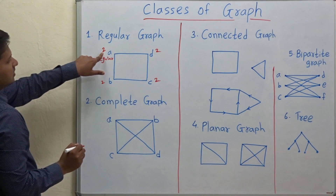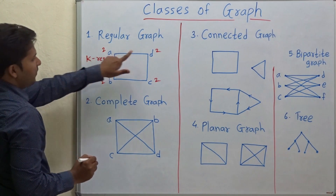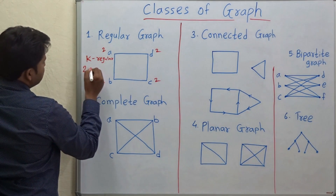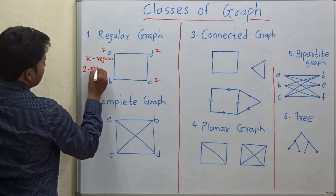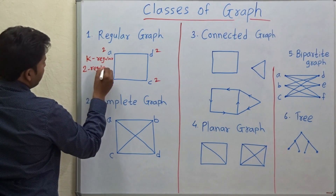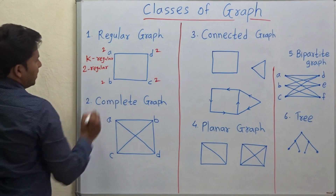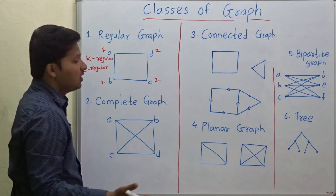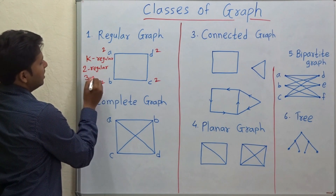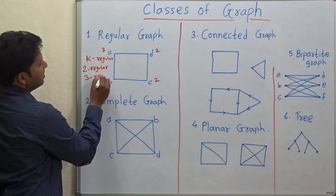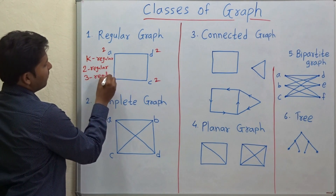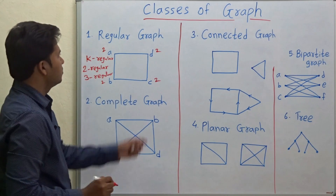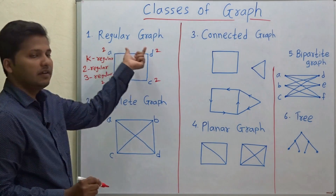Because every vertex in this graph has degree 2, this graph is a 2-regular graph. If in another graph the degree is 3, then it will be called a 3-regular graph. So this is a regular graph.